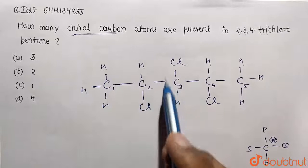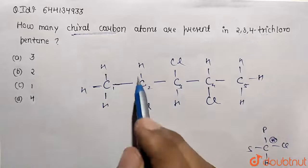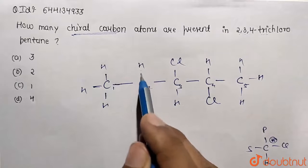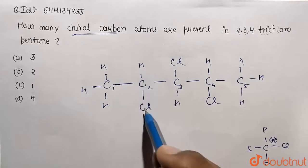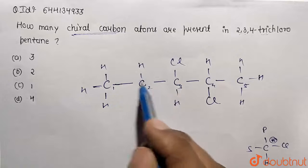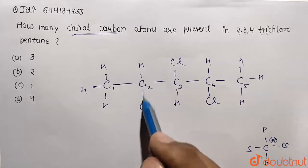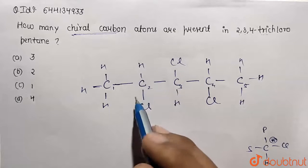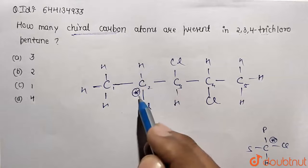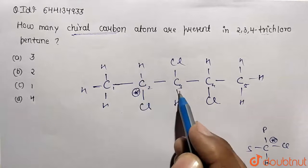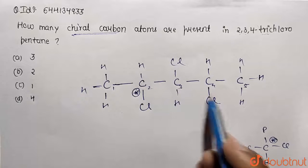Carbon 2 has a large alkyl group on another side, one hydrogen, and one chlorine — meaning it has four different groups on its four sides. So carbon 2 is going to be our chiral carbon.